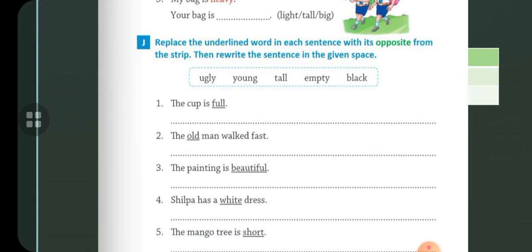The young man walked fast. The painting is beautiful. Opposite of beautiful - ugly. The painting is ugly. Shilpa has a white dress. Opposite of white is black. Shilpa has a black dress. The mango tree is short. Opposite of short is tall. The mango tree is tall.